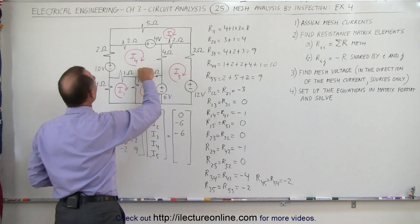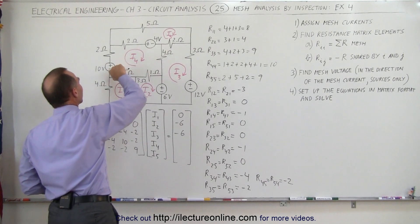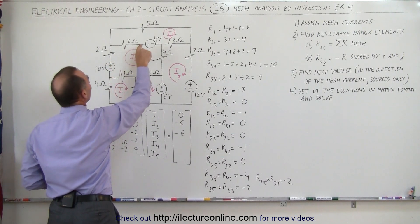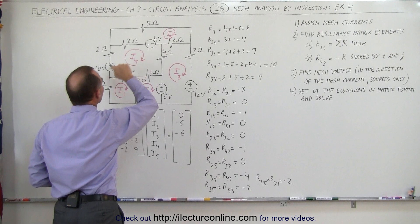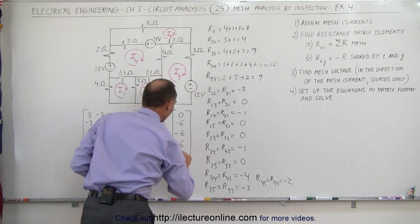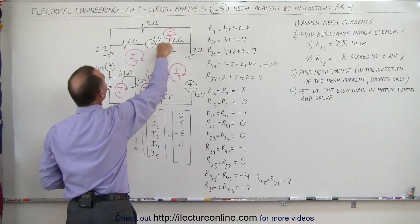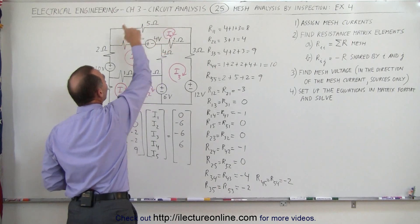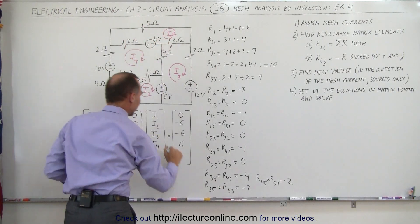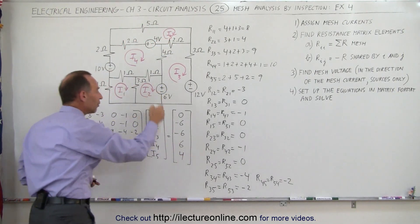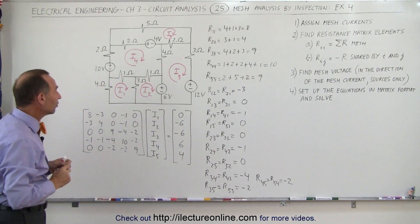The fourth loop, we have 2 voltage sources. We travel clockwise from negative to positive, that's plus 10. From positive to negative, it's minus 4. 10 minus 4, which is a positive 6. And finally, loop 5, we travel around it in a clockwise direction. From negative to positive, that's a plus 4. So now we have all the voltages for each of the meshes.